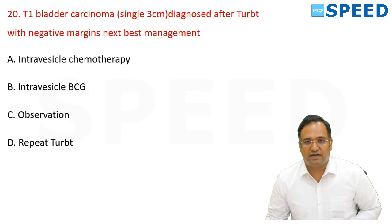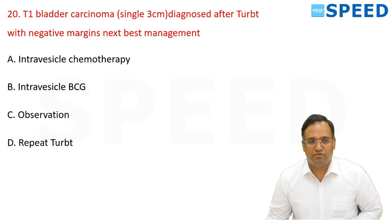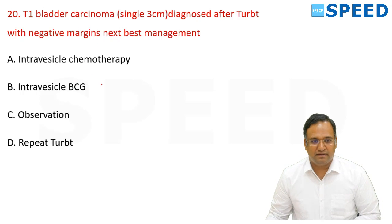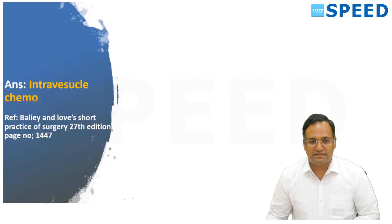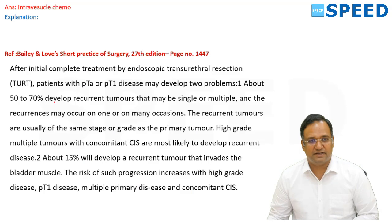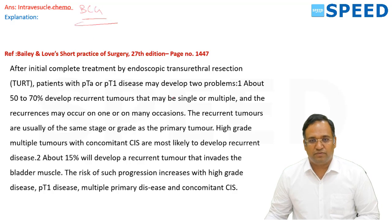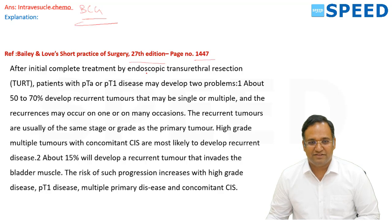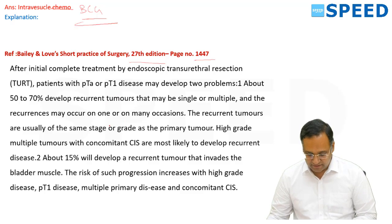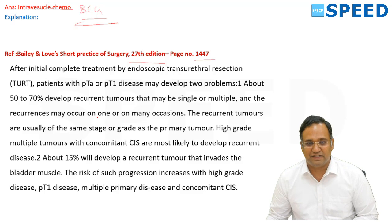Question 20: T1 bladder carcinoma diagnosed after TURBT with negative margins — the next best step is intravesical BCG. If intravesical BCG is contraindicated, then intravesical chemotherapeutic agents should be given. In-situ lesions and T1 lesions should all receive intravesical BCG. Reference: Bailey and Love 27th edition, page 1447.